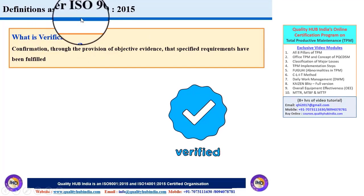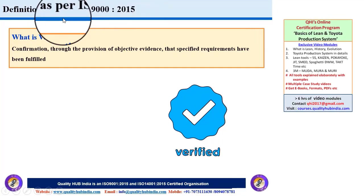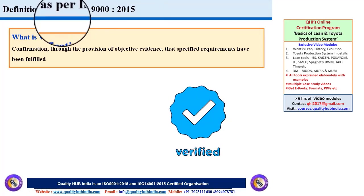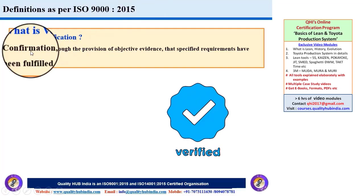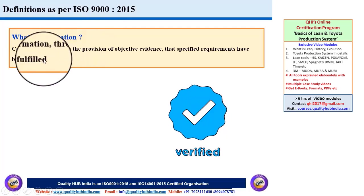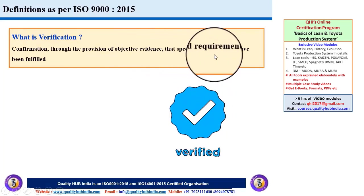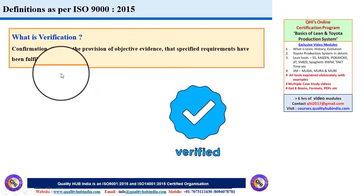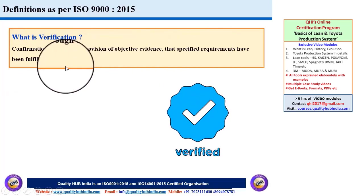As far as ISO 9000:2015 is concerned, it is the standard for fundamentals and vocabulary, and it provides terms and definitions of almost all critical elements pertaining to quality management system. As per the standard, the definition of verification is: confirmation through the provision of objective evidence that specified requirements have been fulfilled. So here it talks about fulfillment of some specific requirement.